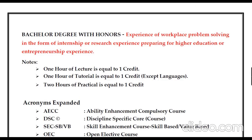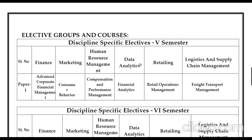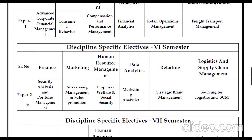There are six specialization groups available in BBA: Finance, Marketing, Human Resource Management, Data Analytics, Retailing, and Logistics and Supply Chain Management. For example, in the fifth semester, if someone selects Marketing they study Consumer Behavior; if someone selects Finance they study Advanced Corporate Financial Management. In the sixth semester, the student studies the second paper from the same group.